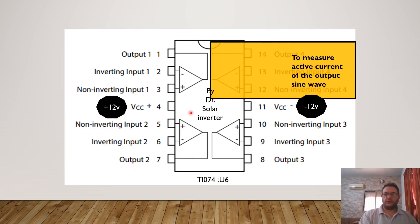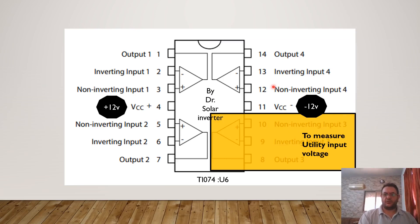The third one is used to measure the active current of the output sine wave, and the last one is used to measure the utility input voltage.